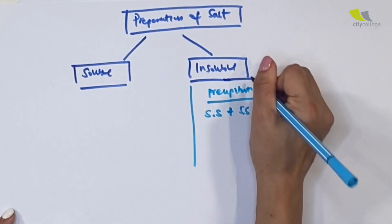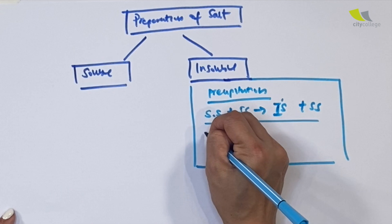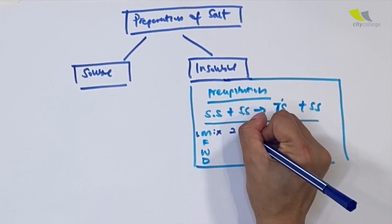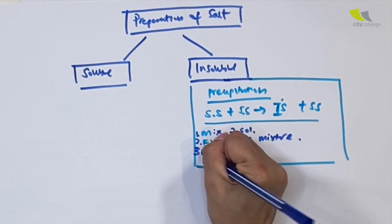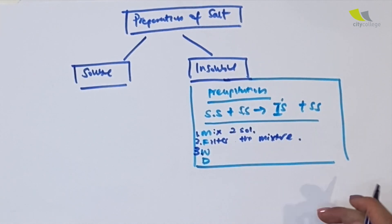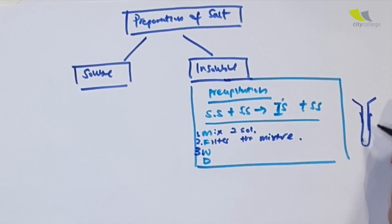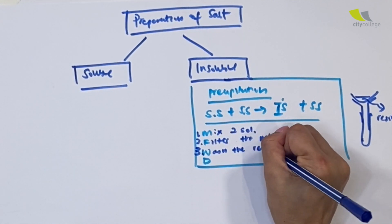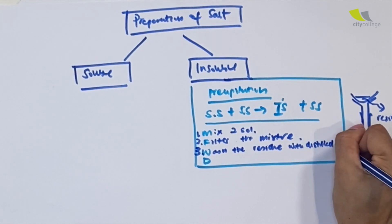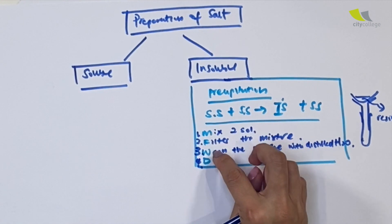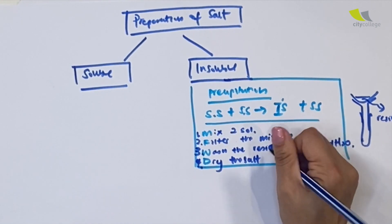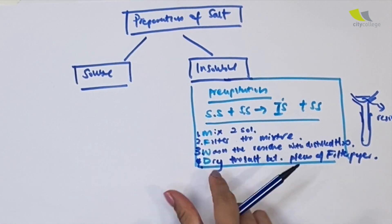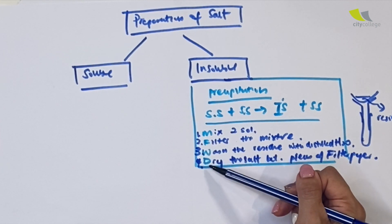What are the steps for precipitation? I call this the four-step method: mix, filter, wash, dry. Step one, mix two solutions together. Step two, filter the mixture. Step three, your insoluble salt is your residue — your desired salt. Wash the residue with distilled water. Step four, dry the salt between pieces of filter paper. An acronym I use: My Father Washes Dishes.